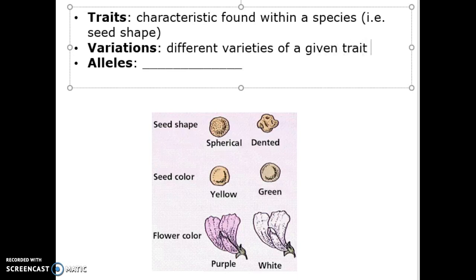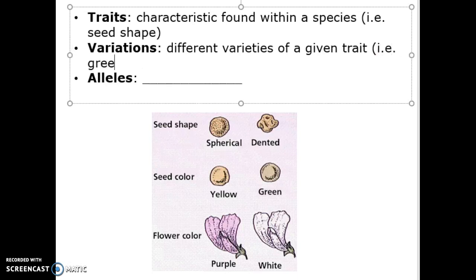Variations are going to be different varieties of a given trait. So again, an example here, when we're looking at the pea plants Gregor Mendel worked with, there's green and yellow. Those are the variations of the trait of color for the seed. We could talk about seed shape. Shape is a trait. Spherical or round versus this dented, kind of wrinkled, those are variations. We could talk about flower color. Flower color is a trait. The two main variations in the pea plants Mendel was studying were purple versus white.